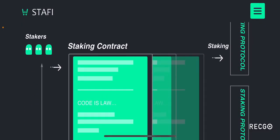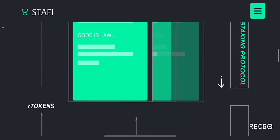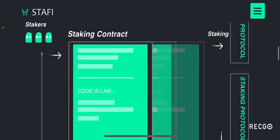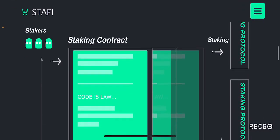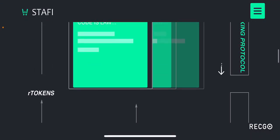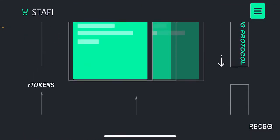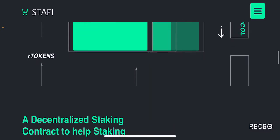If you still don't understand how it works, there's a diagram on the website. Stakers deposit into staking contracts, and overall — what you need to understand is: if you deposit or stake in Stafi, you will get R tokens, your original tokens will continue to be staked and continue to earn rewards, while your R tokens are usable for multiple DeFi applications. That's the simplest way to explain it.